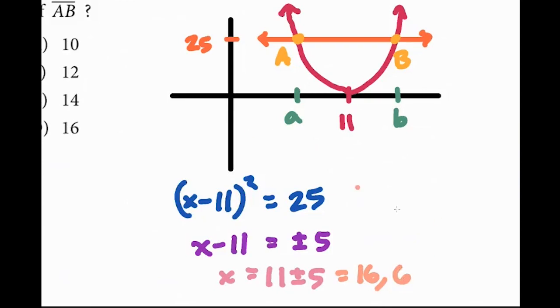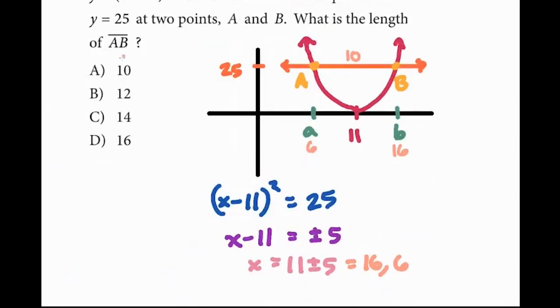So that means A equals 6, I'm going to put that here. This is 6, and this is 16. So the difference between them, if you subtract, means that this line AB is really just going to be 10. And that is the answer.